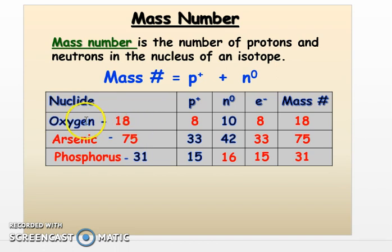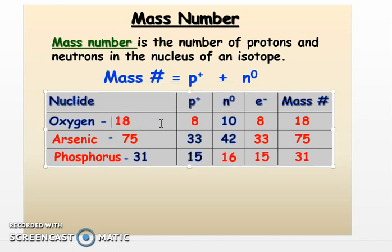So don't worry so much about this. The main thing, though, is I want you to understand that if you have the mass number of an element, you are able to figure out the protons, neutrons, and electrons.